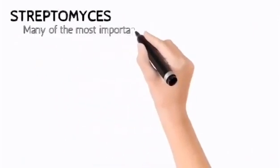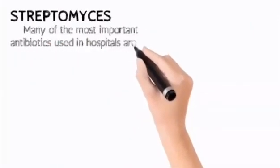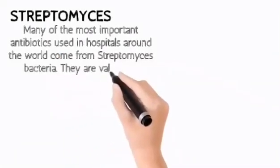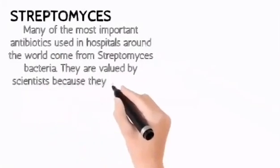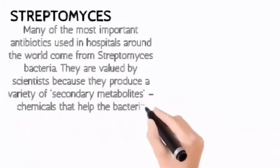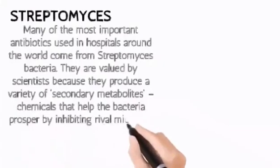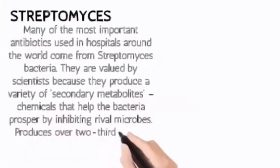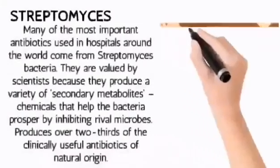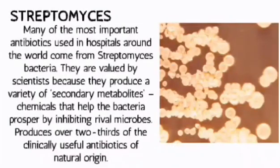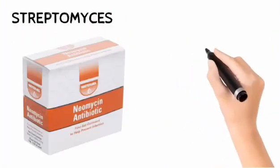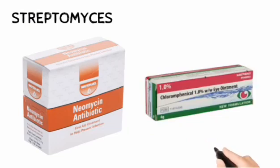Streptomyces — many of the most important antibiotics used in hospitals around the world come from Streptomyces bacteria. They are valued by scientists because they produce a variety of secondary metabolites, chemicals that help the bacteria prosper by inhibiting rival microbes. Streptomyces produces over two-thirds of the clinically useful antibiotics of natural origin, with examples including neomycin, botromycin, and chloramphenicol.